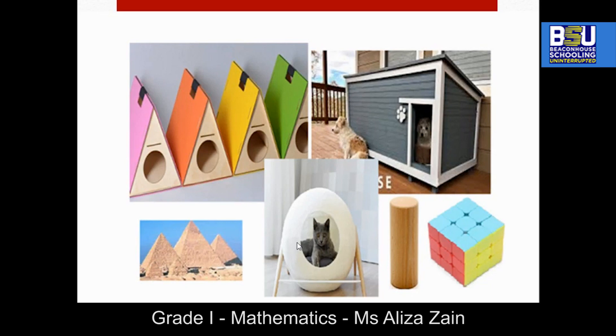Students, do you have any idea about the vertex? The vertex or corner of a 3D shape is a point where two or more edges meet each other. As you can see in this cube, we have a total of eight vertices. What about this cylinder? It doesn't have any vertex. This cat house? Yes, this sphere shape doesn't have any vertex. And what about this pyramid? It has a total of five vertices.